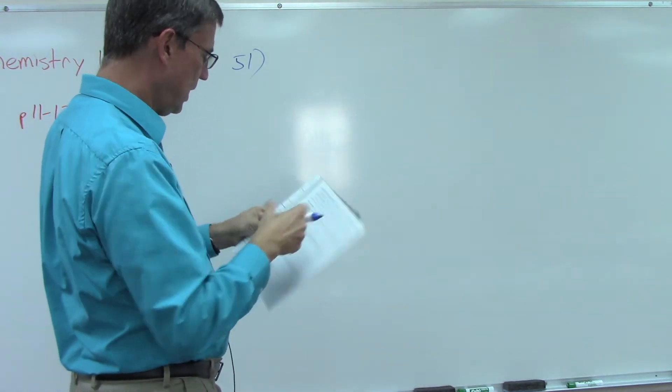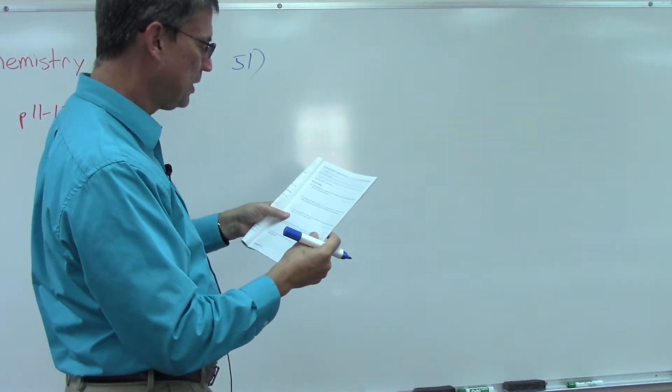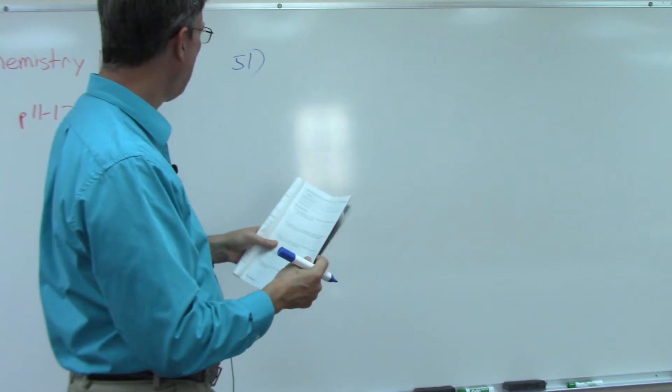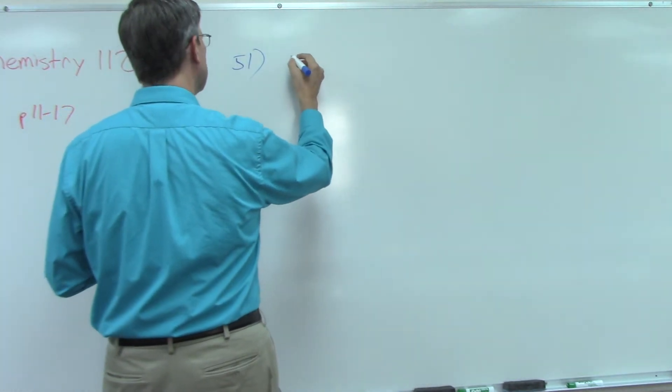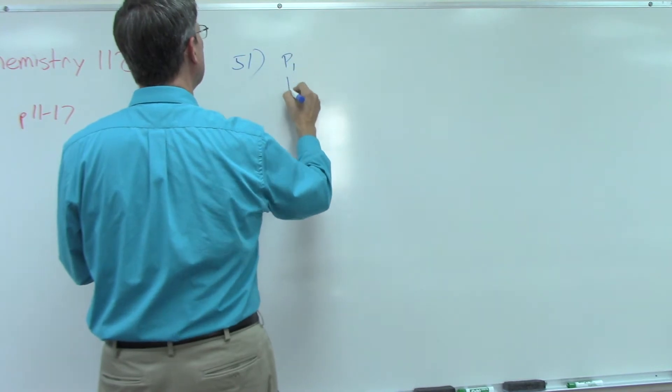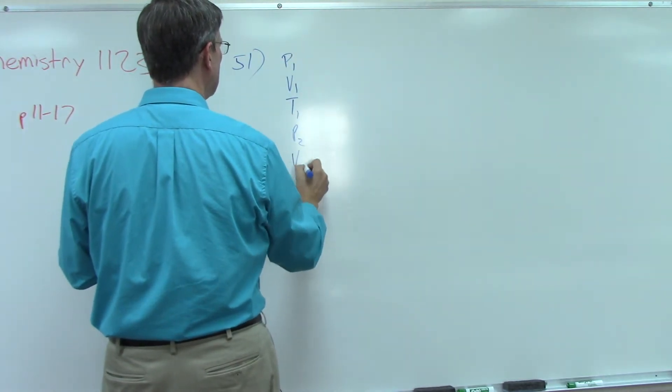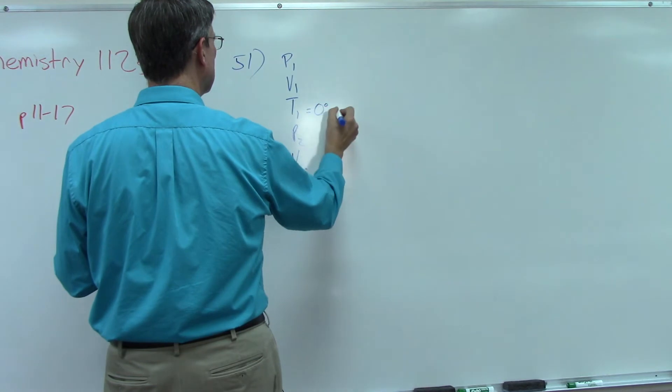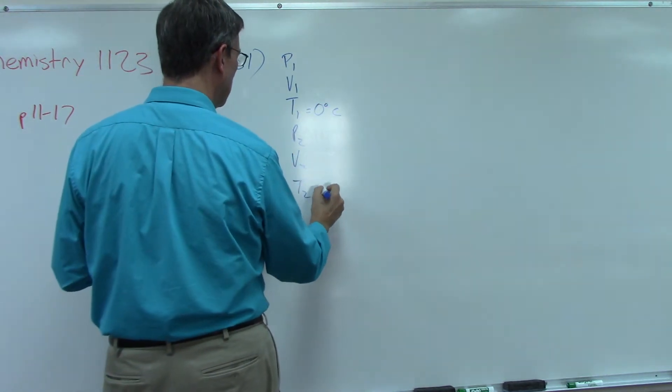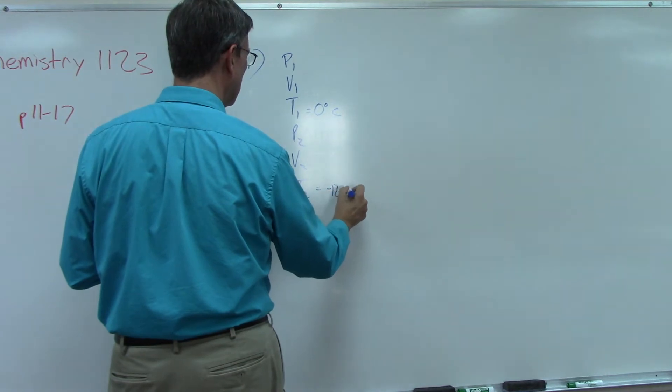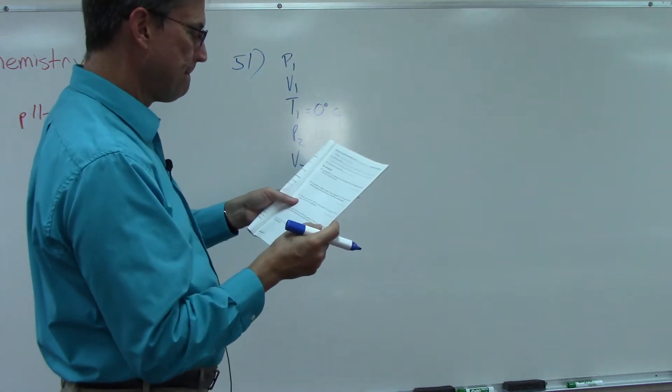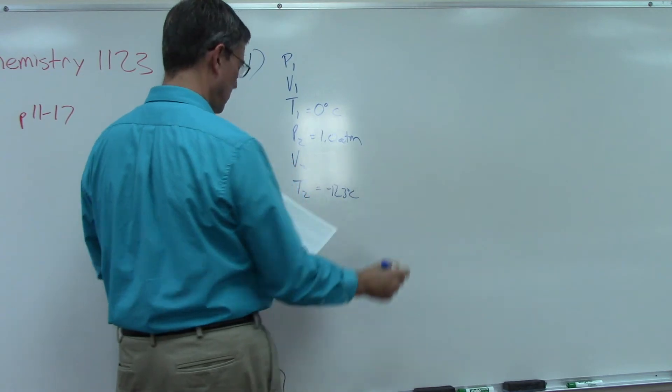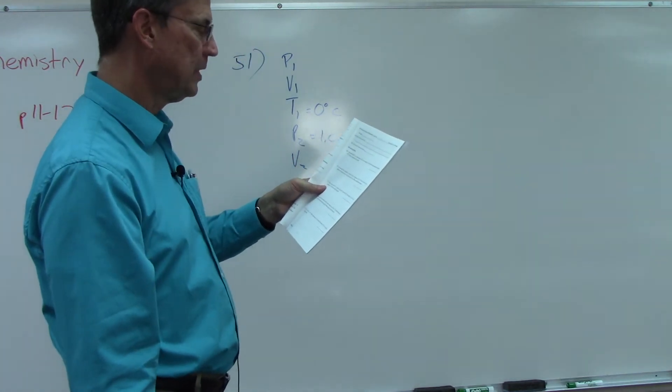So we'll choose that one. During a cryogenics experiment, a sample of gas with a temperature of zero was cooled to negative 123 and a pressure of 1.0 atmospheres. So let's list what we know here. We have p1, v1, t1, p2, v2, t2. Sample gas with a temperature of 0 degrees Celsius was cooled to negative 123 degrees Celsius and a pressure of 1.0 atmospheres. Guess what? It doesn't say anything about volume.